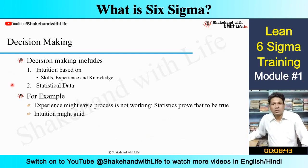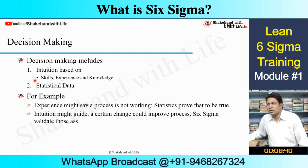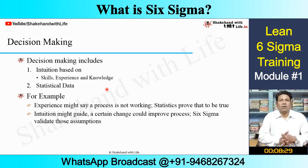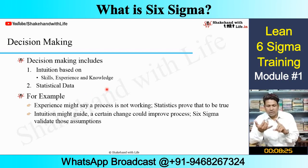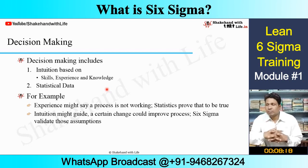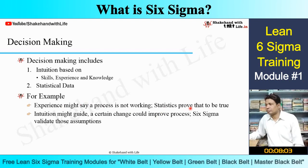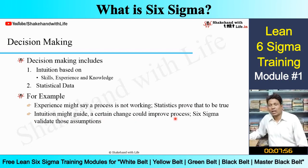Decision making includes two things: intuition and statistical data. Intuition includes skills, experience, and knowledge. Most people make their decisions on the basis of their skills, experience, and knowledge. But if you want to make your decisions more precise, you require statistical analysis. For example, experience might say a process is not working, and statistics can prove whether that is true.